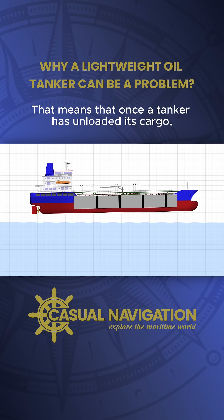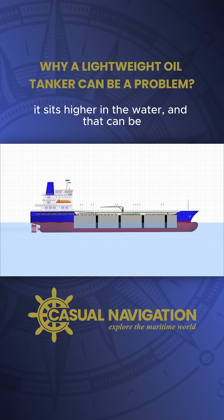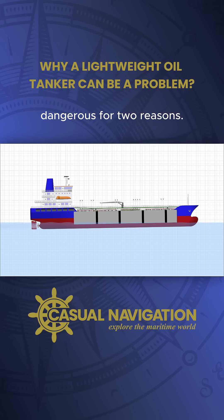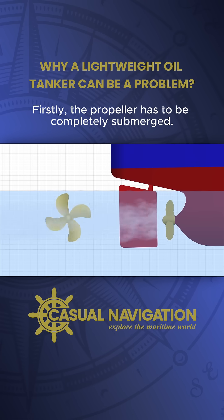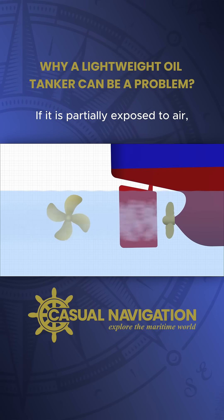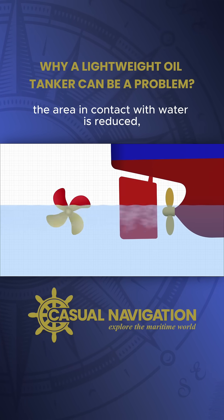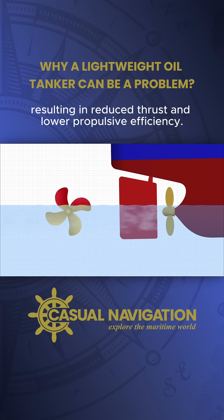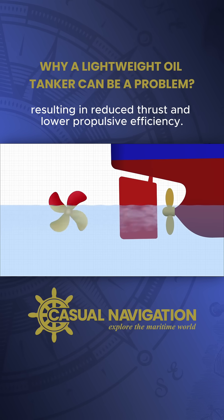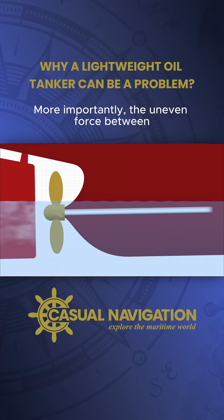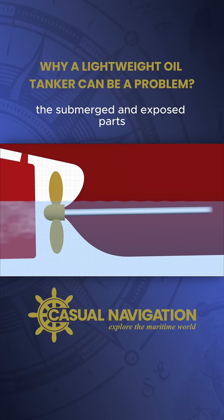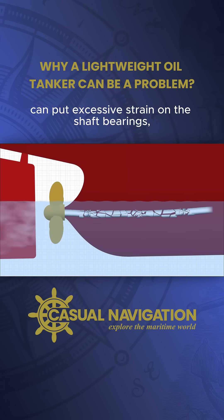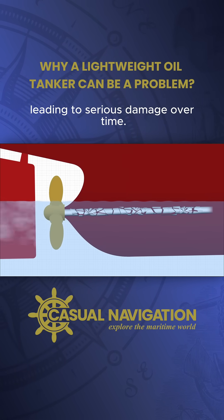That means that once a tanker has unloaded its cargo, it sits higher in the water, and that can be dangerous for two reasons. Firstly, the propeller has to be completely submerged. If it is partially exposed to air, the area in contact with water is reduced, so less water is pushed with each rotation, resulting in reduced thrust and lower propulsive efficiency. More importantly, the uneven force between the submerged and exposed parts can put excessive strain on the shaft bearings, leading to serious damage over time.